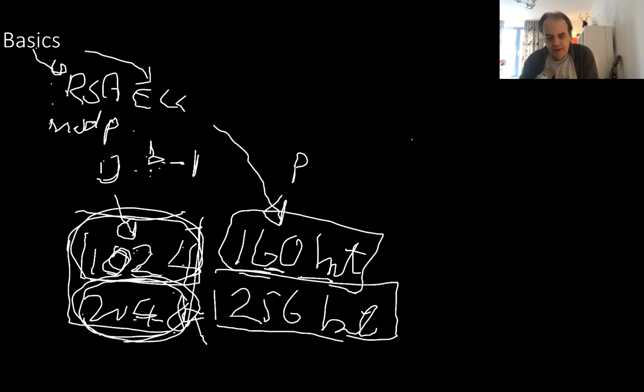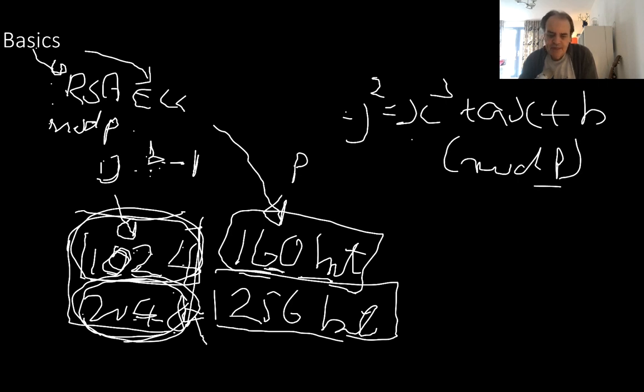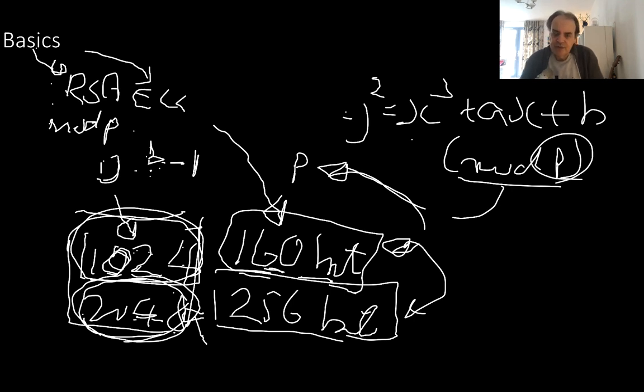With elliptic curve we have a curve that looks a bit like this, and all the operations are done mod p. So we select a prime number with a certain size to make sure that it's difficult to determine our keys.